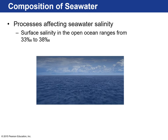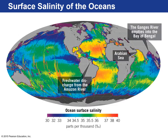Because of those processes, surface salinity in the open ocean varies between 33 parts per thousand and 38 parts per thousand. Here is a satellite image showing the range in salinity at the ocean surface.